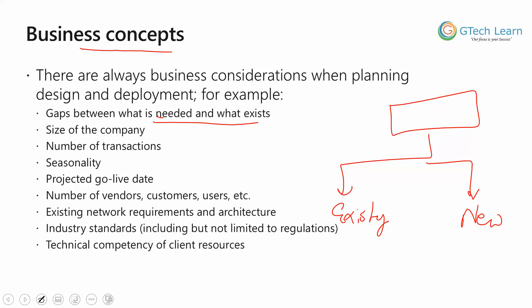The size of the company is an important factor, and the number of transactions is also really important to effectively plan the scaling of the apps — what size of the VMs we should plan and the tiers of our environment. Seasonality is important, as is the projected go-live date, which should be mapped to the LCS portal accordingly. We should also have the number of vendors, customers, and users readily available so they can be imported into the system, along with existing network requirements and architecture needs, industry standards, and the technical competencies available at your customer's resources.